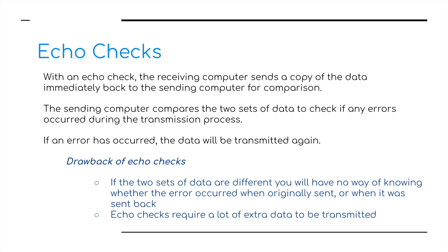The third checking system is echo checking. With an echo check, the receiving computer sends a copy of the data immediately back to the sending computer for comparison — the sender sends a message and it's bounced straight back to check whether the two sets of data have any errors. If an error does occur, the data will be transmitted again. However, there are drawbacks: if the two sets of data are different, you have no way of knowing whether the error occurred when it was originally sent or when it was sent back. Echo checks also require a lot of extra data to be transmitted — if you're sending a big file, that massive amount of data has to be sent back and potentially sent again.